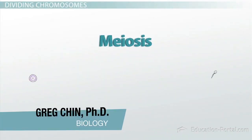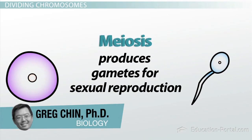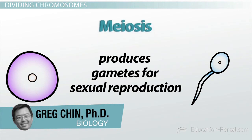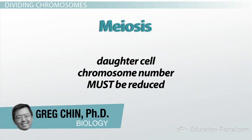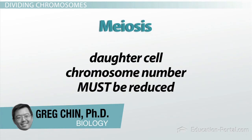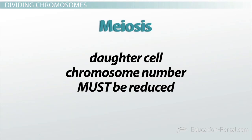We've learned thus far that meiosis is a special type of cell division that makes gamete cells for sexual reproduction. The most important distinction between meiosis and mitosis is that the daughter cell chromosome number must be reduced.